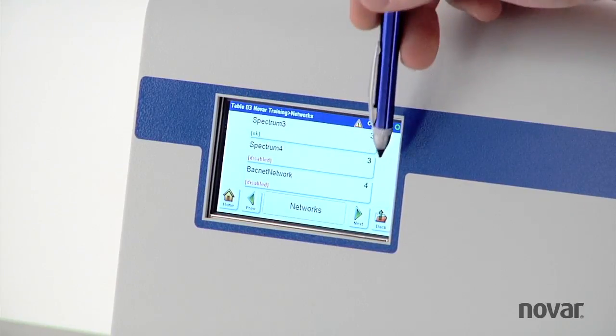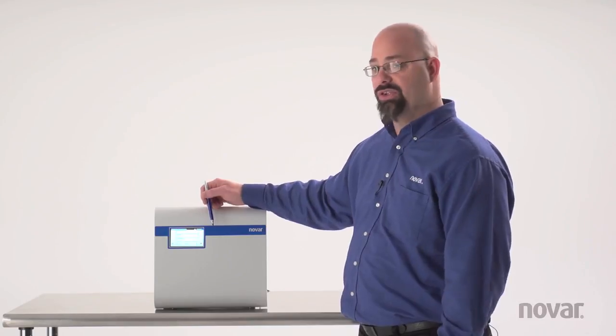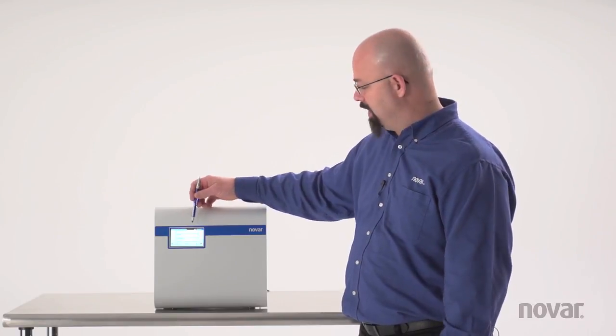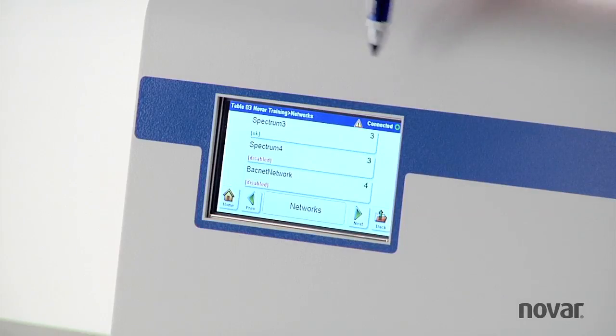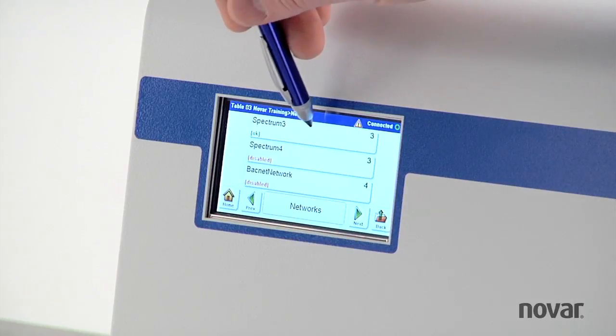But my BACnet network has four modules. Depending on what modules you're looking for to see what's in comm loss or not, you'll have to press that corresponding network. In this example we'll just hit Spectrum 3.